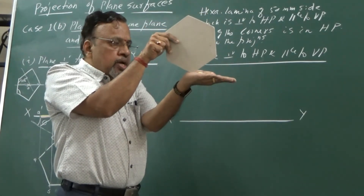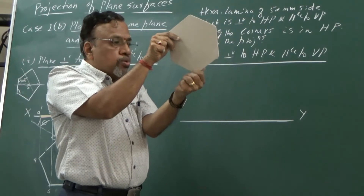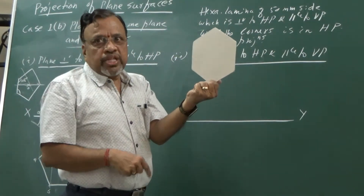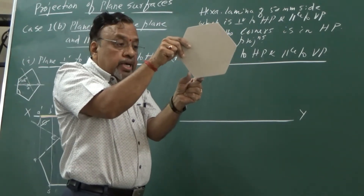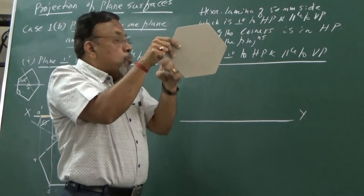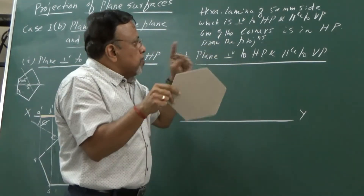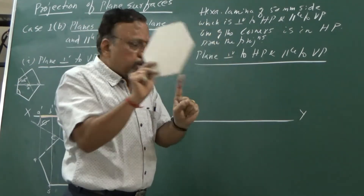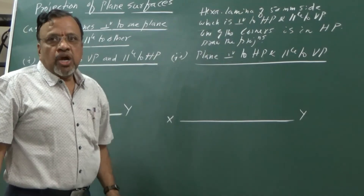Since a corner is touching and the two sides make equal inclinations, the two opposite sides will be perpendicular to HP. If the inclinations are unequal, those two opposite sides will not be perpendicular to HP. So I want all of you to draw a unique solution - whenever a corner is in HP, always consider the two adjacent sides will make equal inclinations. I need to draw the hexagon such that two sides should be perpendicular.